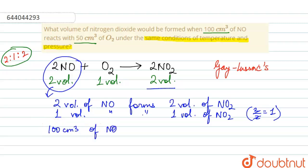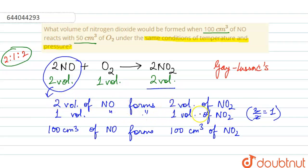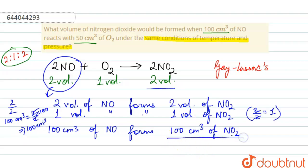...will definitely form 100 cm³ of NO₂. By unitary method: two volumes of NO form two volumes of NO₂, so one volume of NO forms two by two volume of NO₂. Similarly, 100 cm³ will form (2/2) × 100 = 100 cm³. So 100 cm³ of NO₂ is formed when this reaction takes place. This is your answer. Thank you.